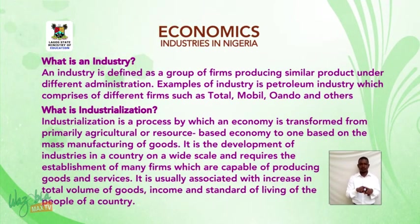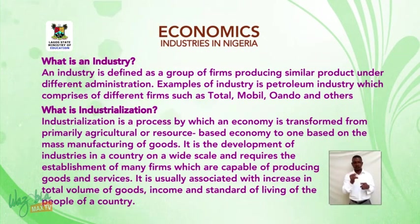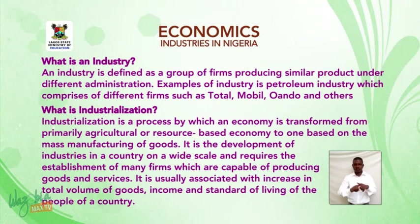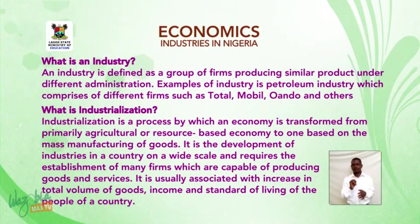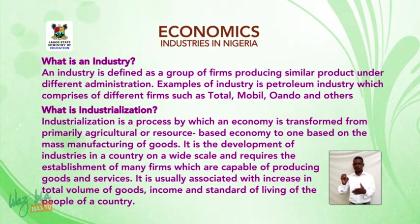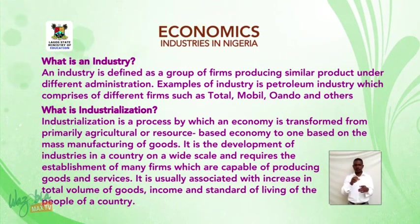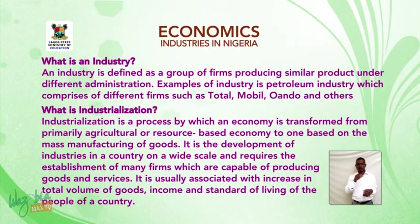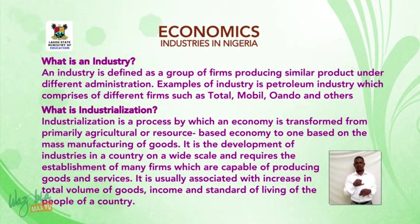Industry. What is an industry? An industry is defined as a group of firms producing similar products under different administrations. An example of an industry is the petroleum industry, which comprises different firms such as Total, Mobil, Oando, and others.